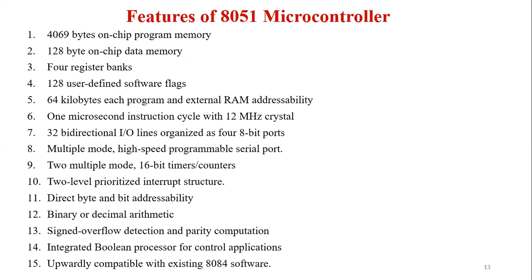The features of the 8051 microcontroller are: first, 4096-byte on-chip program memory; second, 128-byte on-chip data memory; third, 4 register banks; fourth, 128 user-defined software flags; and fifth, 64 kilobytes each of program and external RAM addressability.